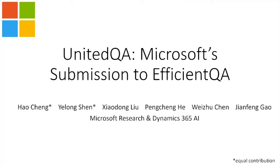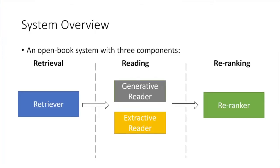Hi, this is Hao. I'm going to present our submission to the Efficient QA Competition, UniteQA. This is joint work with Ye Longshen, Xiaodongliu, Hongchenhe, Wei Zhucheng, and Jianfenggao at Microsoft Research in Dynamics 365 AI. Here is an overview of our system, which is an open-book system with three stages: retrieve, read, and then rerank.